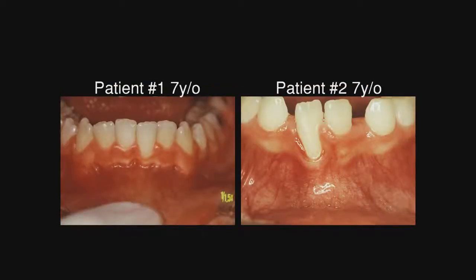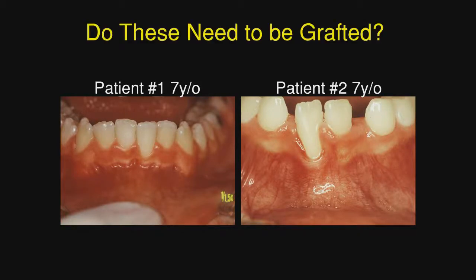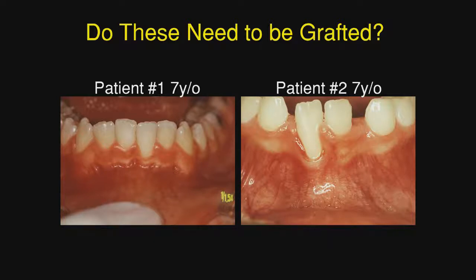The next thing to discuss is when do we need to do grafting. Here we have two patients and I ask the question: do they need to be grafted? I will make the argument that they don't. On the left, you can see the prominence of that central incisor, and once orthodontics is done, that gingival marginal tissue will move incisally and the gingival heights of all those teeth will be evened out.